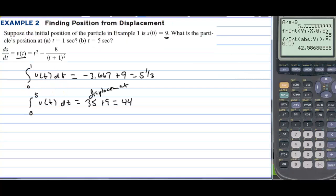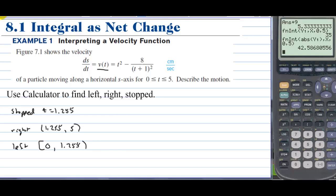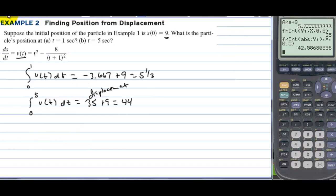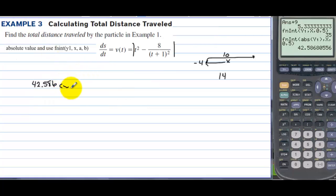We should be putting centimeters on here. So the total distance is 42.586 centimeters, the displacement and position values are also in centimeters.